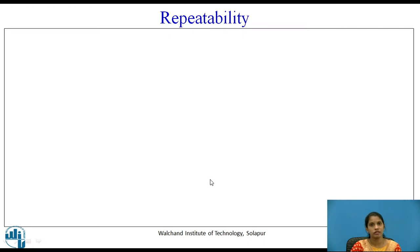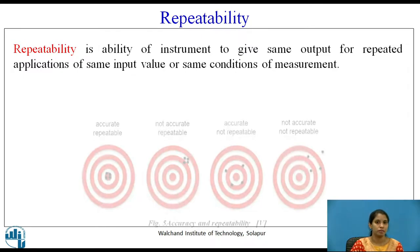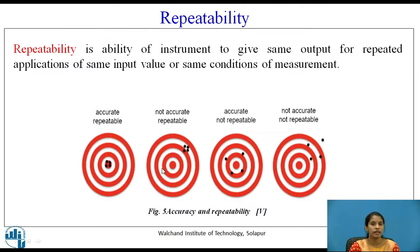Repeatability. The name itself indicates it is the ability of a system or instrument to give the same output for repeated applications of the same input value or the same conditions of measurement. If an instrument gives repeated readings of the same value for the same input, that is known as repeatability. Figure 5 shows four diagrams: the first is accurate and repeatable, the second is not accurate but repeatable, the third is accurate but not repeatable, and the fourth is not accurate and not repeatable. Focus on the first and second diagrams where the readings or shots are repeatable.